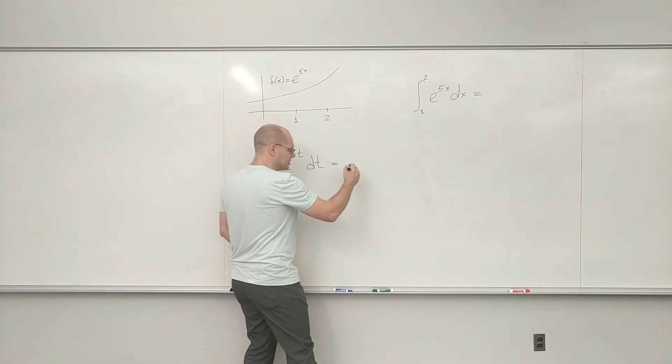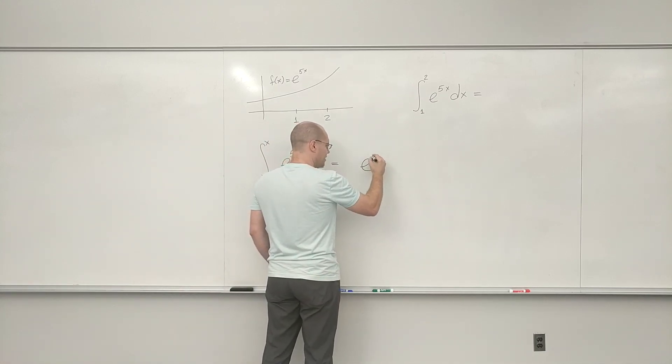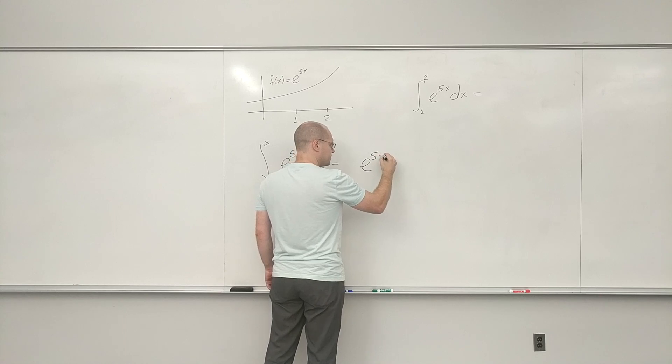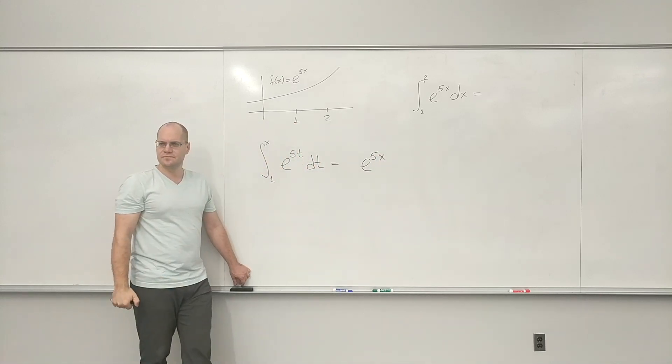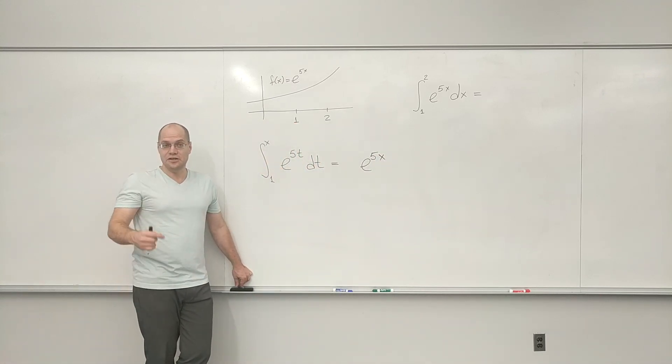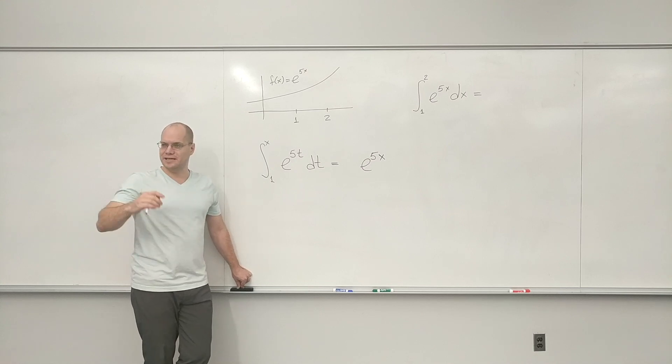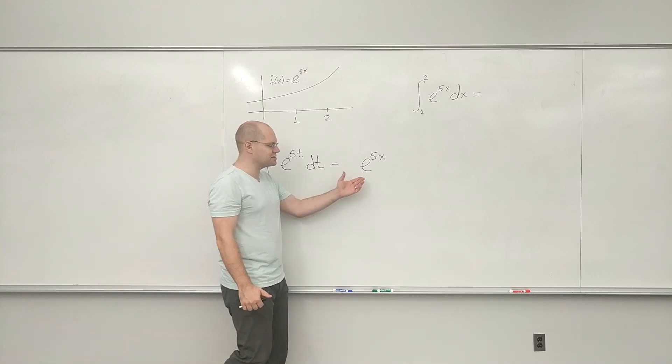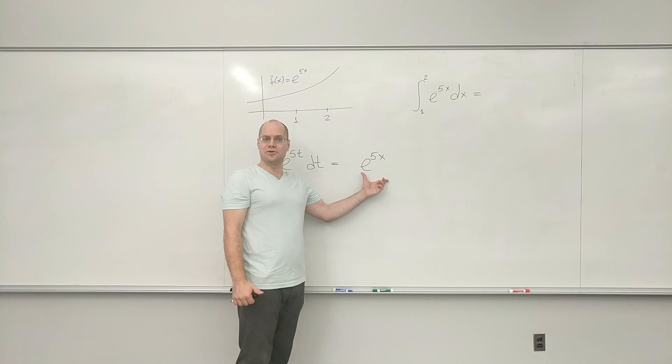And my guess will be, because I know how exponentials work, e to the 5x. That's my guess. Because I know that exponentials produce exponentials when we take the derivative. And now I ask myself, is my guess exactly right?